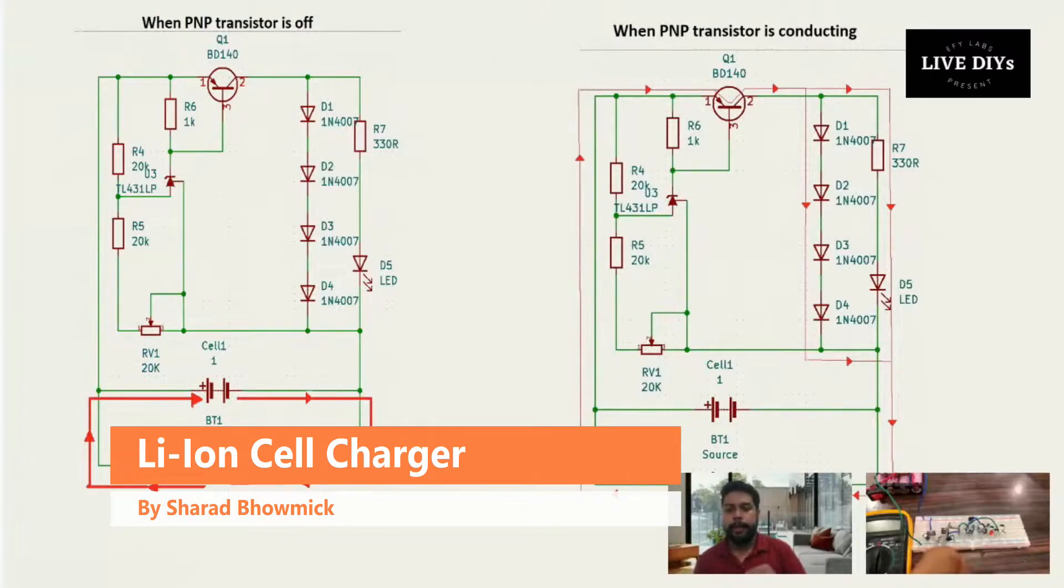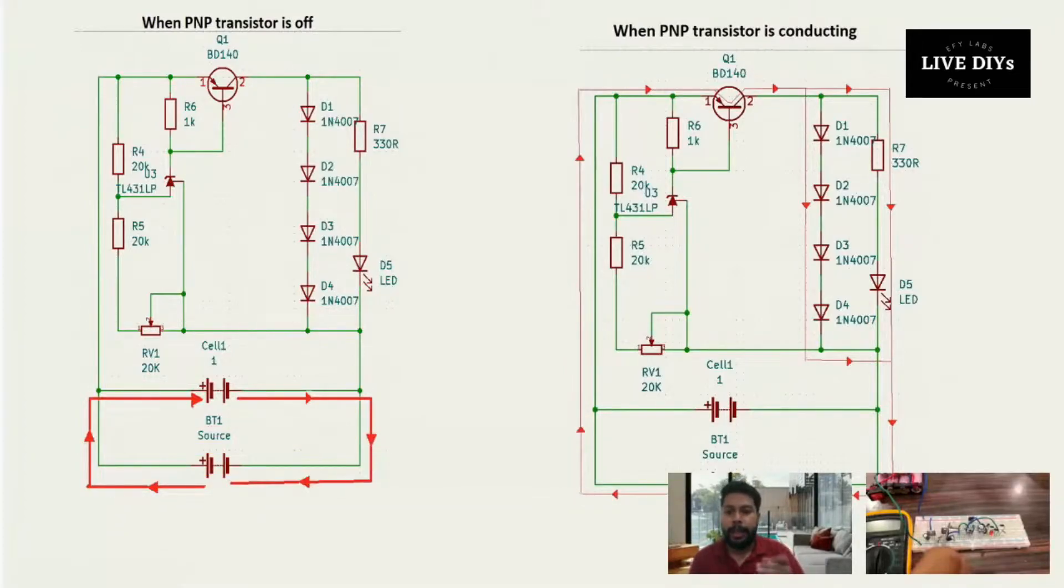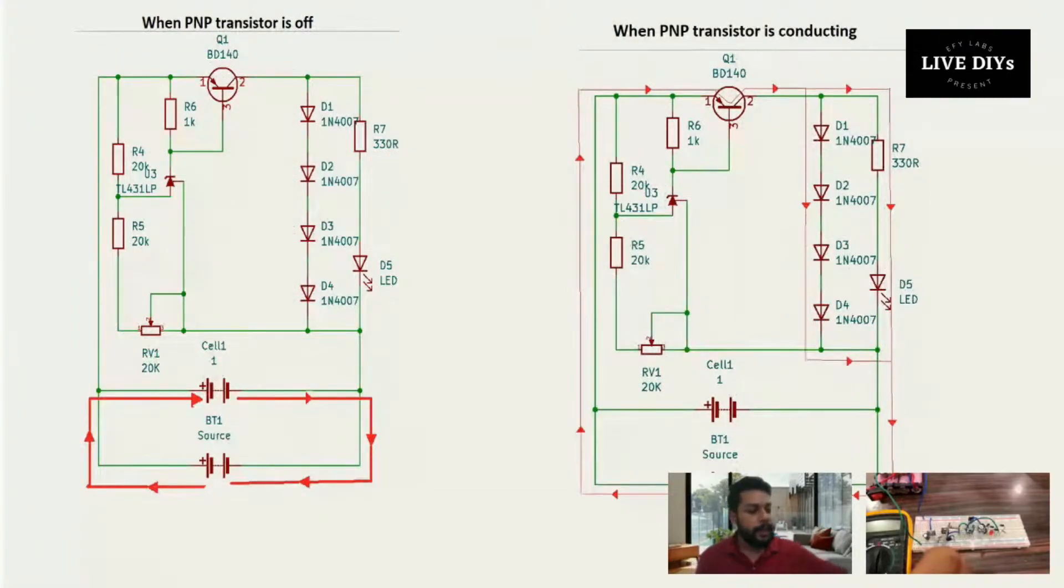When we set the reference voltage in RV1, it opens or closes as per our wish. For our circuit for a single cell, we usually use 4.2 volts as a reference voltage, and we can change that. I will show you how we can change the reference voltage when I show the circuit.